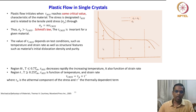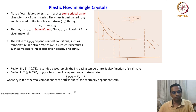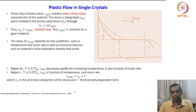In region 1, where temperature is greater than or equal to 0.25 Tm, tau_CRSS is a function of both temperature and strain rate. We can rewrite tau_CRSS as tau_A plus tau*, where tau_A is the athermal component of stress and tau* is the thermally dependent term.